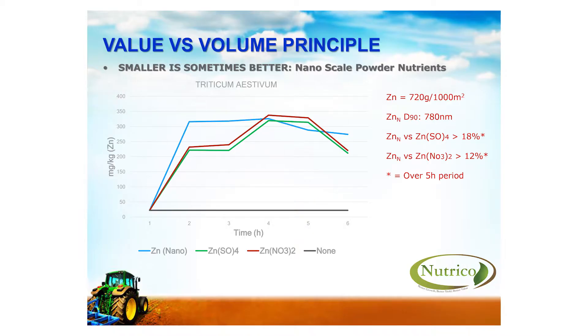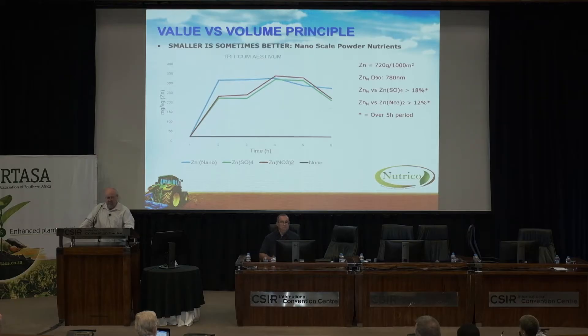The same was done on wheat — a slightly different scenario but the same type of result. Over the 6-hour period, 18% and 12% higher zinc values were obtained within the plant material. This is an example of nutrient efficiency when a totally insoluble material is used and just converted — particle size converted — to a lower nanometer scale.